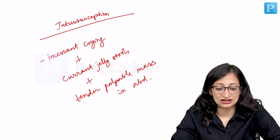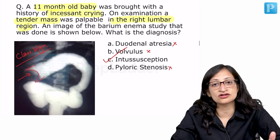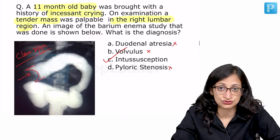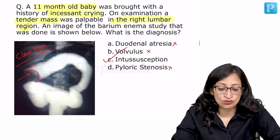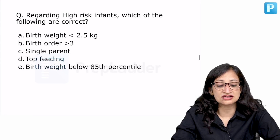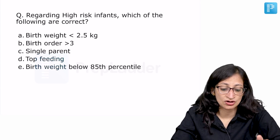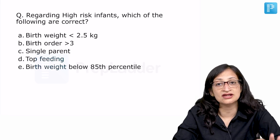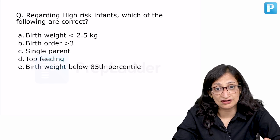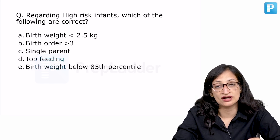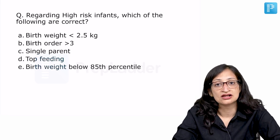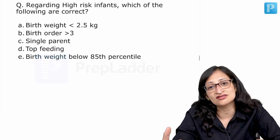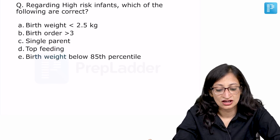This is a very important topic which we have already discussed in our videos. Moving ahead — regarding high risk infants, which of the following are correct? The options are: birth weight less than 2.5 kg, birth order more than 3, single parent, top feeding, birth weight below 85th percentile. Let us discuss what makes a baby high risk.